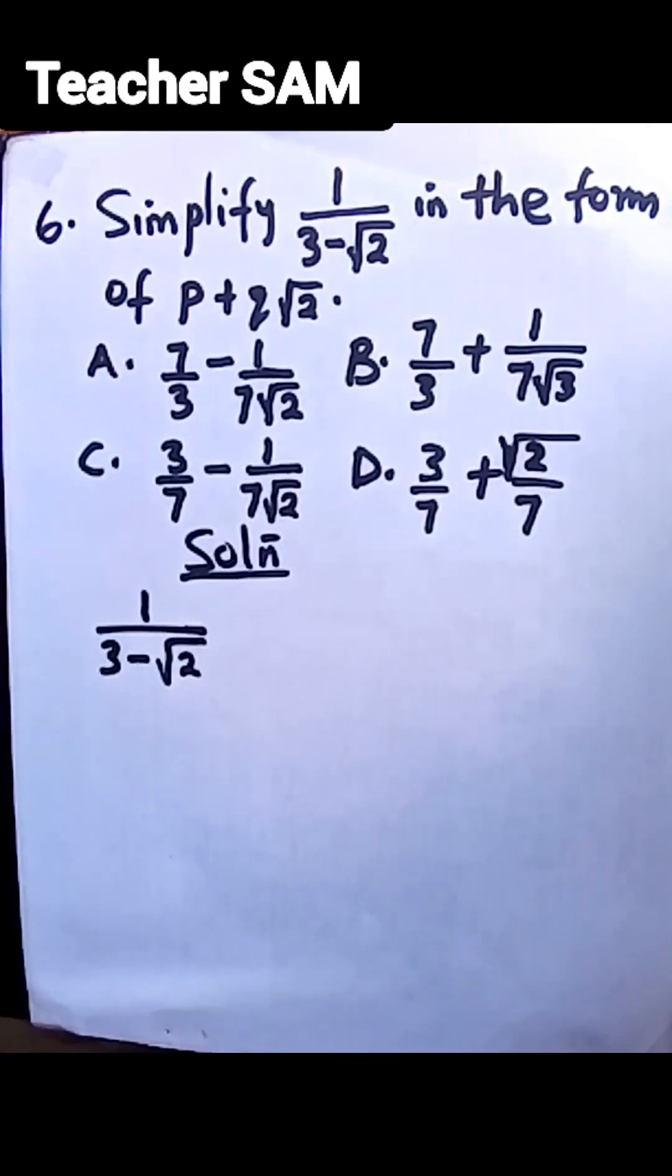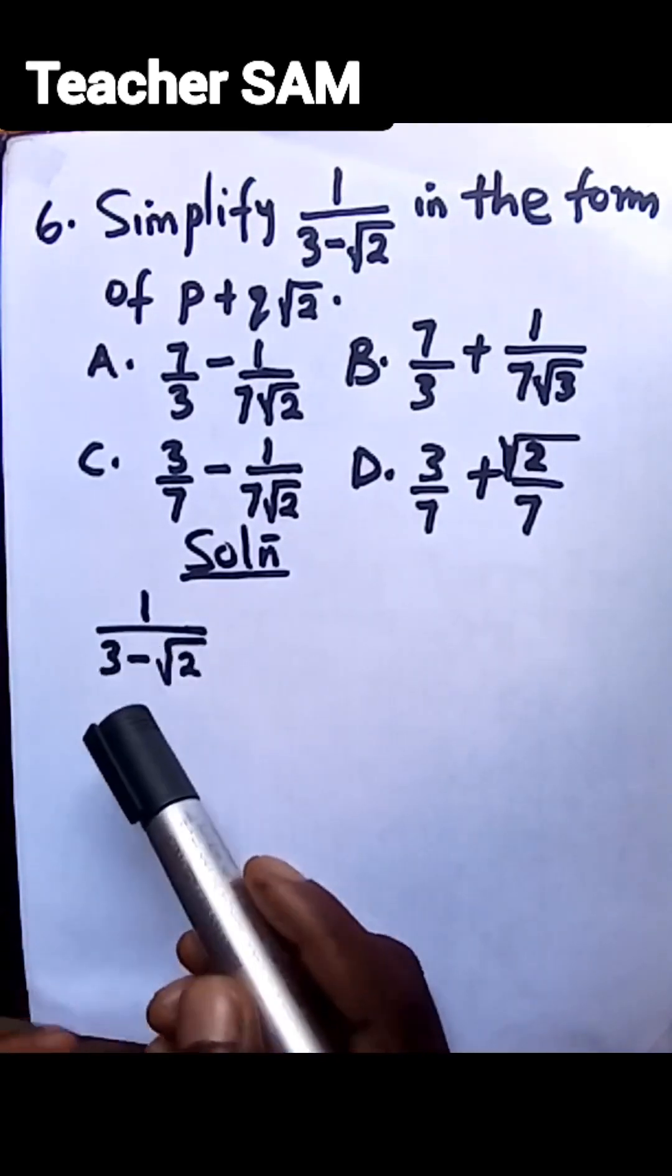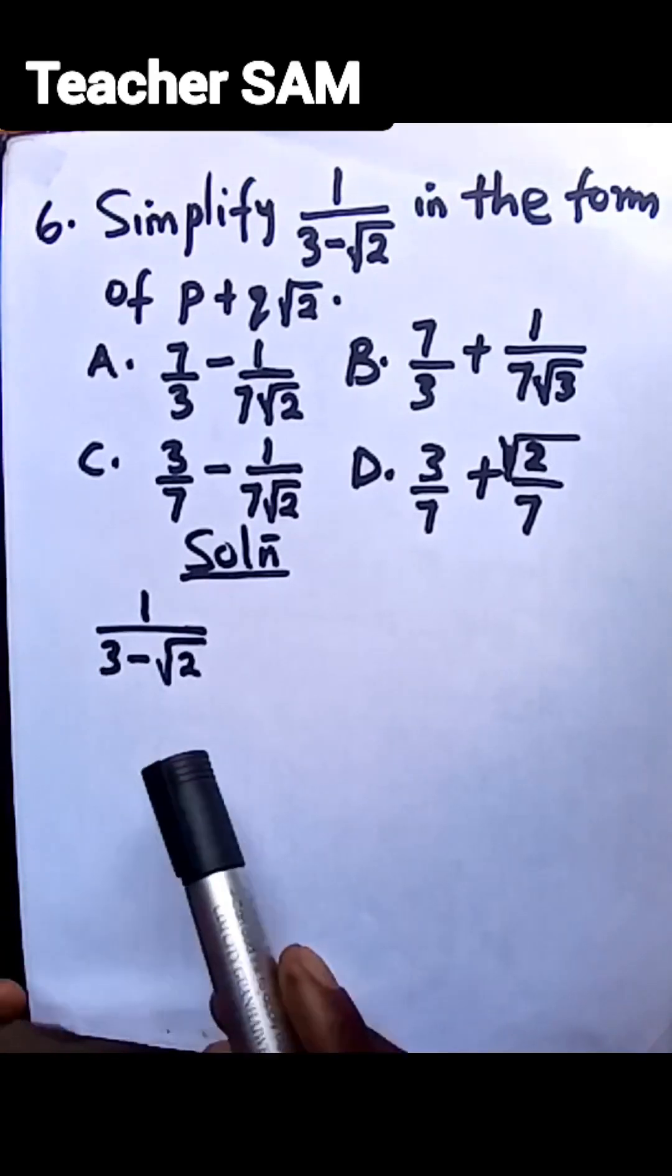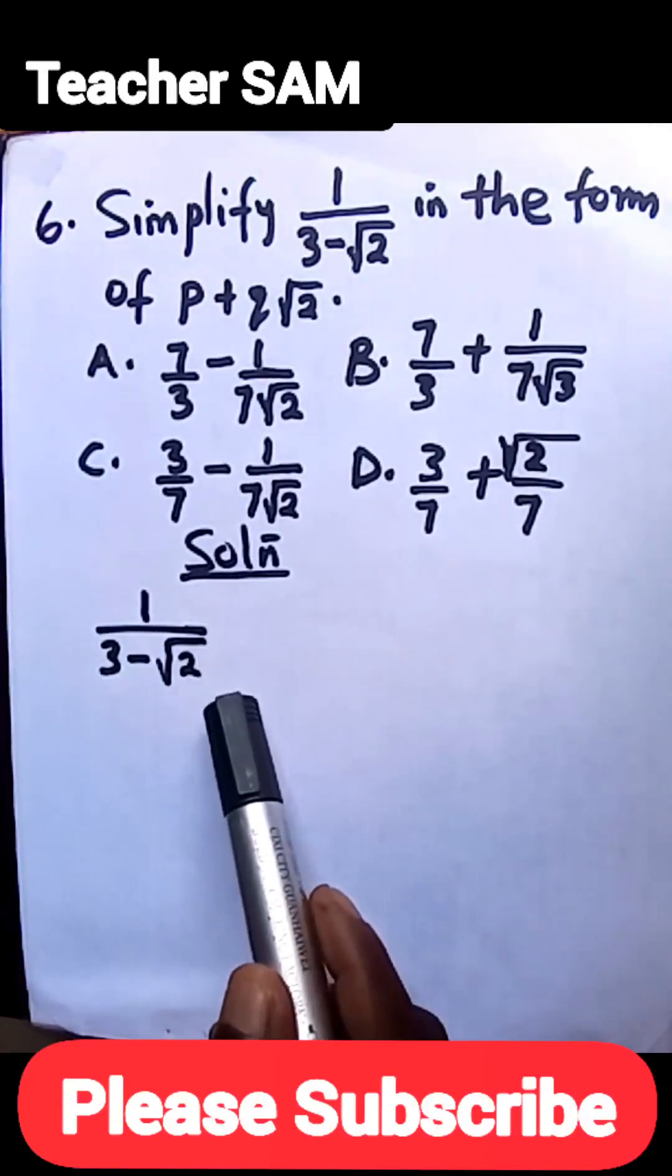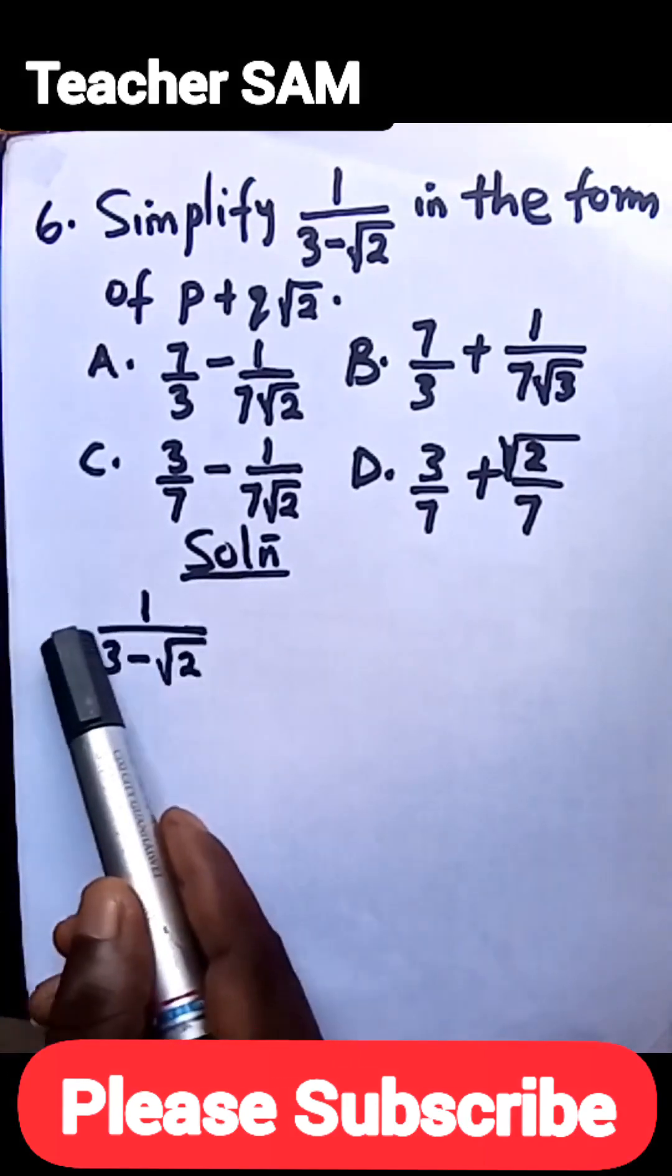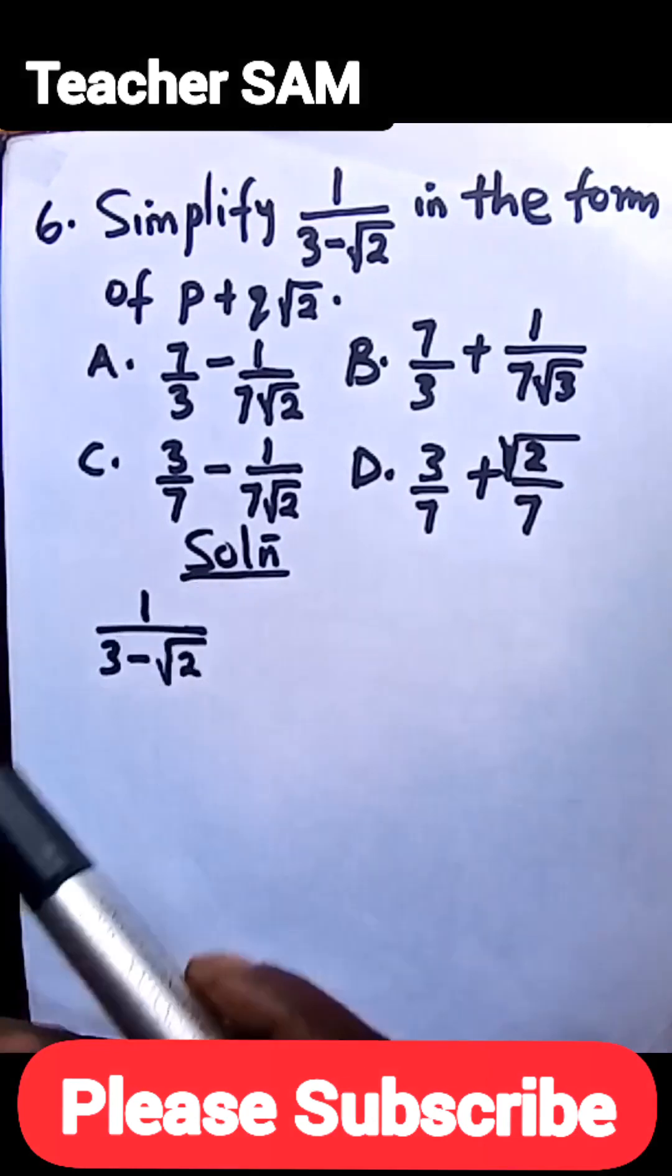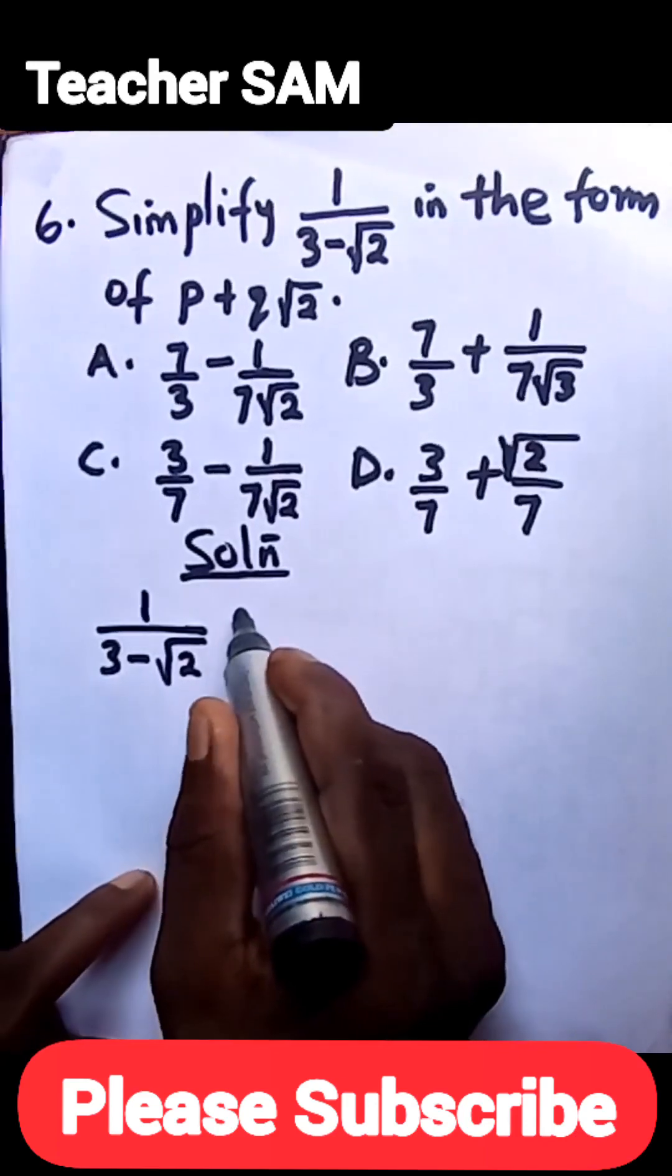So what we can simply do is multiply the numerator and denominator by the conjugate of this surd. What I mean by conjugate: if you have a negative in this case, you multiply the numerator and denominator by the positive of this. If it's positive, multiply both by the negative. But in this case it's negative, so we are going to multiply by the positive.